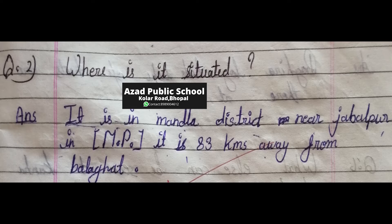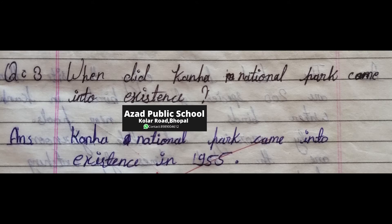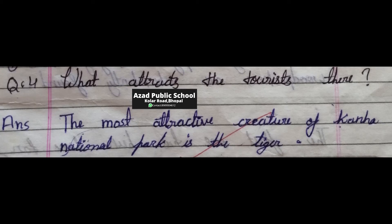It is 83 kilometers away from Palahat. Jabalpur se Mandla district mein ye sthit hai, 83 kilometers Palahat se door. Third: When did Kana National Park come into existence? Answer: Kana National Park came into existence in 1955. 1955 mein bana.